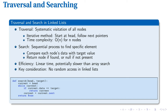Traversing a linked list involves systematically visiting each node. This process starts at the head node and follows the next pointers sequentially until reaching the end. Unlike arrays, linked lists lack random access, which impacts search efficiency. When searching for a specific element, we must traverse the list node by node, comparing each node's data with the target value. This sequential nature results in a linear time complexity of O(N), potentially slower than array searches in certain scenarios. The trade-off between flexibility and search efficiency is crucial when choosing data structures for specific applications.